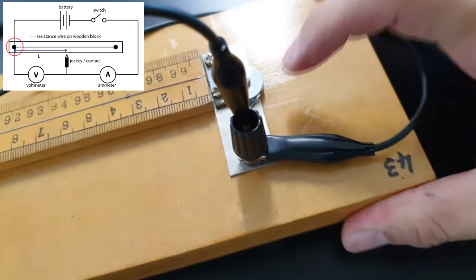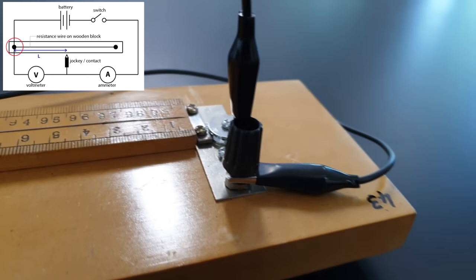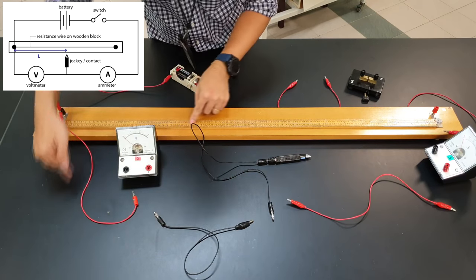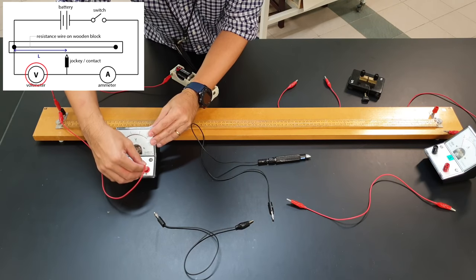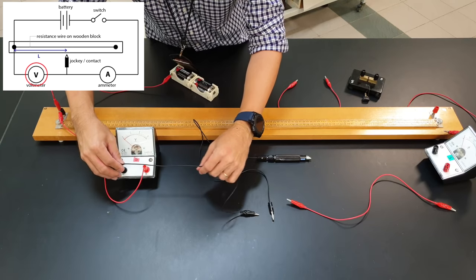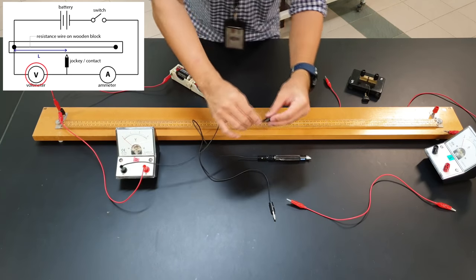Conventional current will flow into the positive terminal of the voltmeter and come out from the negative terminal of the voltmeter.